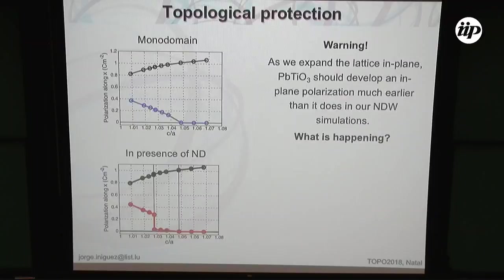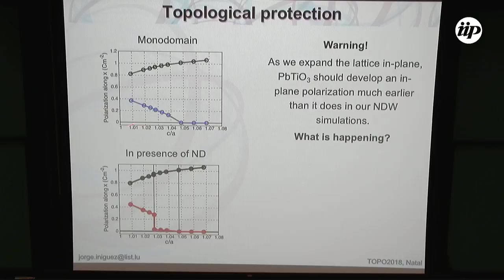I would like to talk a second about topological protection — a term it took me a while to understand. I presented this in talks as an example of topological protection, but now I'm not so convinced anymore. In the monodomain case, plotting polarization as a function of c/a — going from elongated out-of-plane to elongated in-plane — I can rotate the polarization. In the presence of my nanodomain and the skyrmium that comes with it, the result is very different, and the question is why.